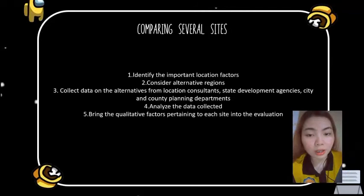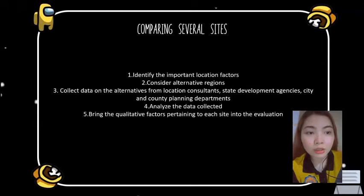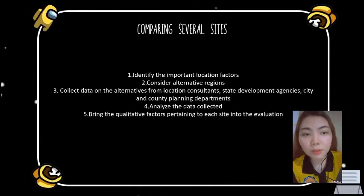To consider alternative regions and state their pros and cons. The third step is to collect data on the alternatives from location consultants, state development agencies, city and country planning departments, chambers of commerce, land developers, electric power companies, banks, and on-site visits. Some of this data may also be contained inside the GIS.